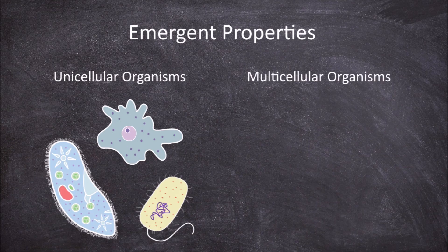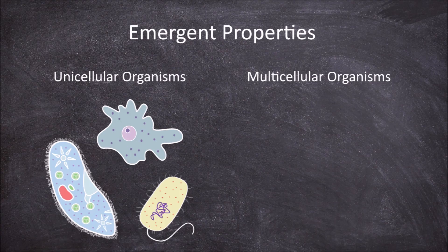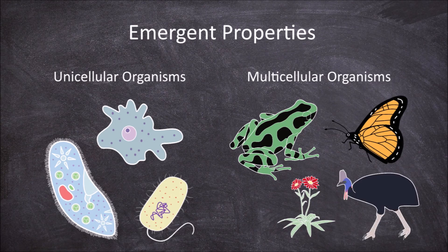A multicellular organism is an organism that consists of more than one cell, such as butterflies, frogs, flowering plants, and vertebrates.